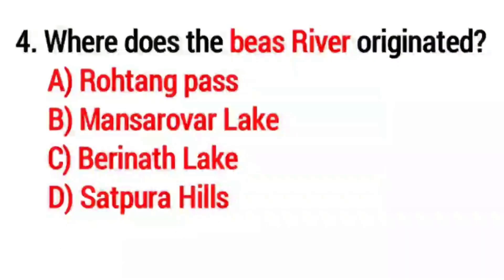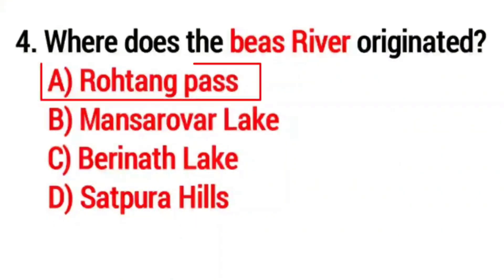Question No. 4. Where does the Beas river originate? Answer Option A: Rohtang Pass.